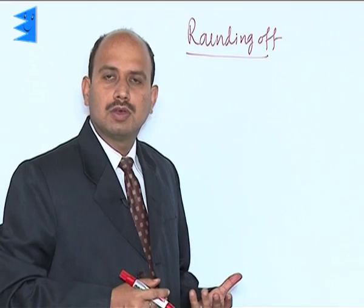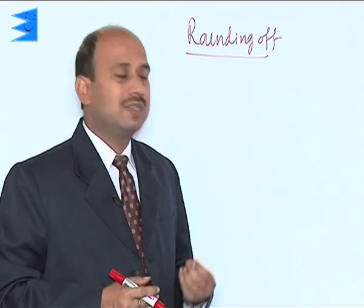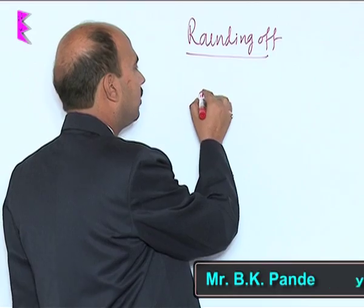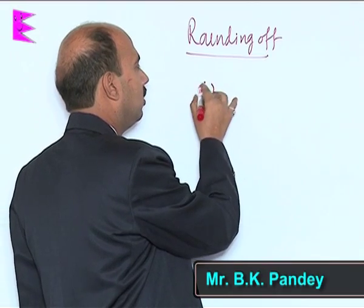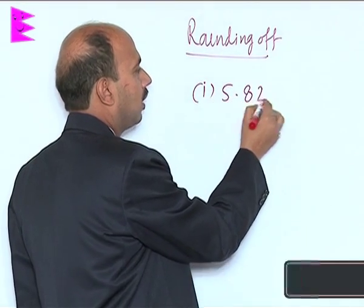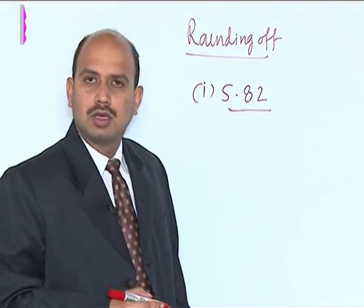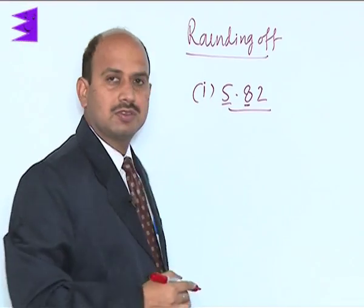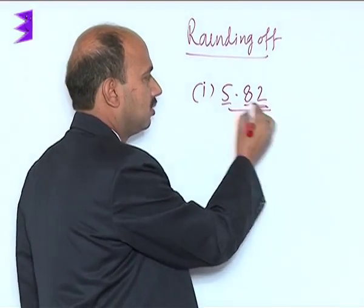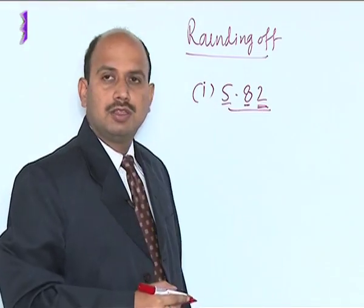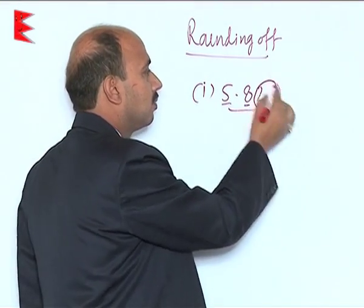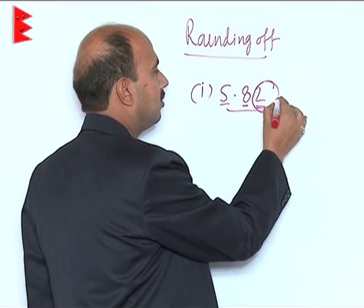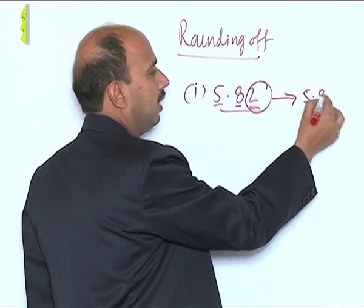Now we are going to discuss examples of rounding off numbers. Suppose the first example is 5.82. Here 5 and 8 are certain digits, and 2 is the uncertain digit. This 2 is less than 5, so we drop it, and this is rounded off to 5.8.